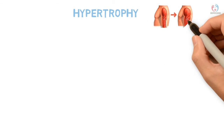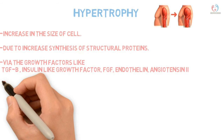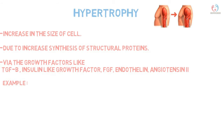Hypertrophy means an increase in the size of the cell, not the number of cells. It is due to increased synthesis of structural proteins stimulated by growth factors such as tumor growth factor beta, insulin-like growth factor, fibroblast growth factor, endothelin, and angiotensin 2. Examples of physiological hypertrophy include bulging of muscles in bodybuilders and enlargement of the uterus in pregnancy and after heavy workout.